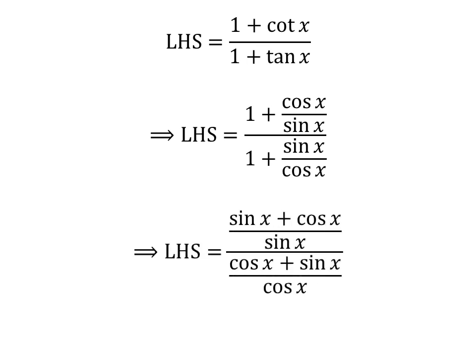Addition of fractions gives us left-hand side of the identity is equal to sine of x plus cosine of x upon sine of x, over cosine of x plus sine of x upon cosine of x.